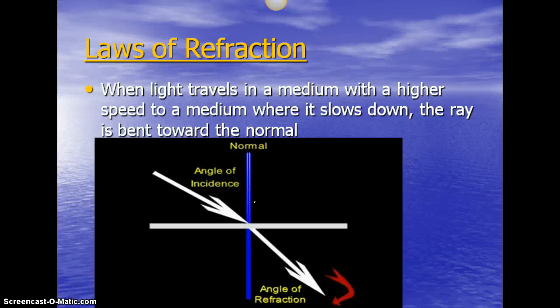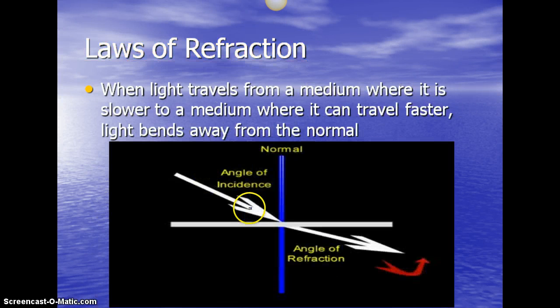Laws of refraction include light traveling in a medium with a higher speed to a medium where it slows down. The ray is bent toward the normal, and the normal is that big blue line in the picture. And when light travels from a medium where it is slower to a medium where it can travel faster, the light will bend away from the normal.